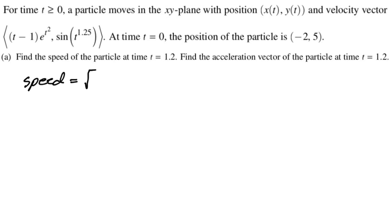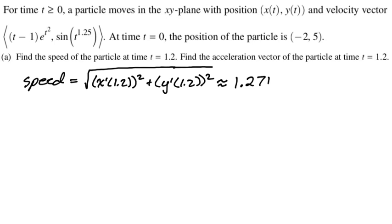For speed, we're going to do the square root of, and then the velocity vector is x prime of t, y prime of t. So we're doing x prime of 1.2 squared plus y prime of 1.2 squared. So this is purely calculator, right? So I get approximately 1.271. I'll show a screenshot at the end, and if you're not sure how to do it, I have a lot of videos where I'm actually doing these sorts of problems on the calculator.